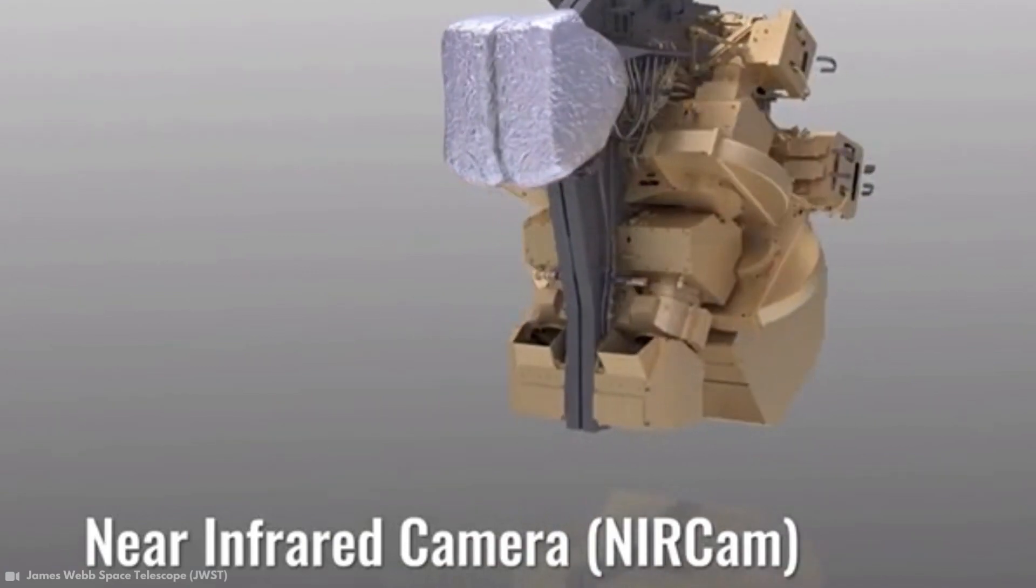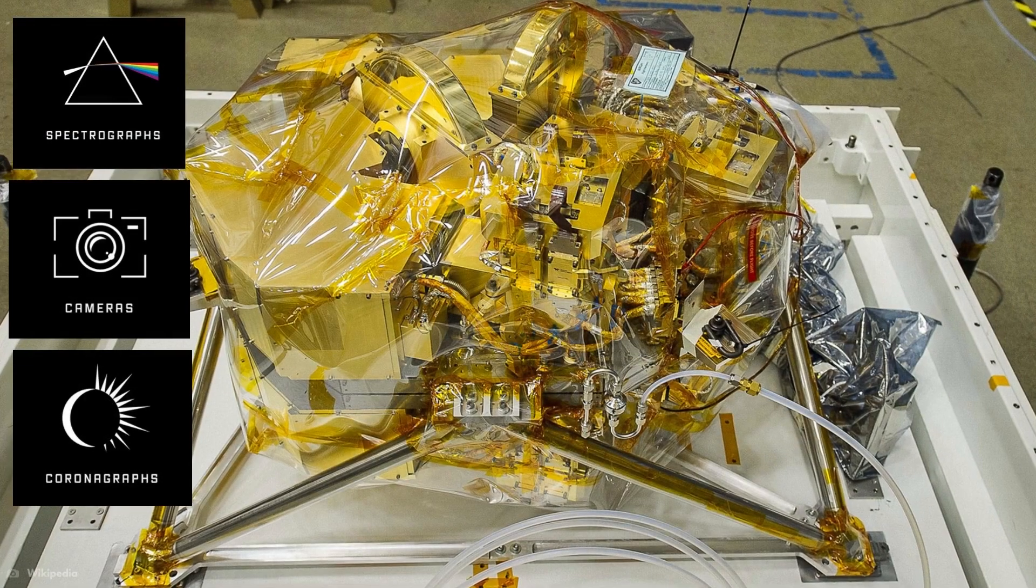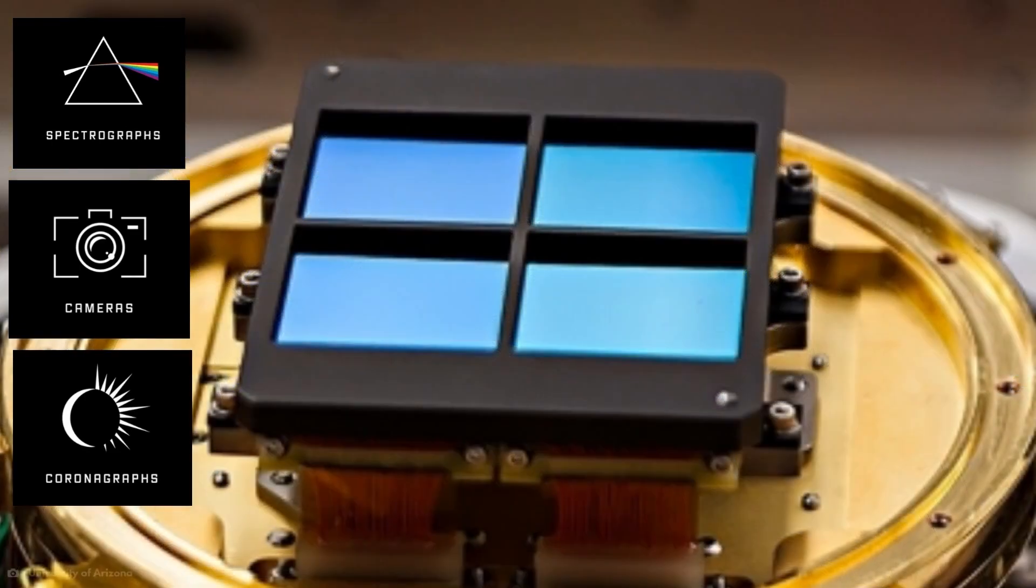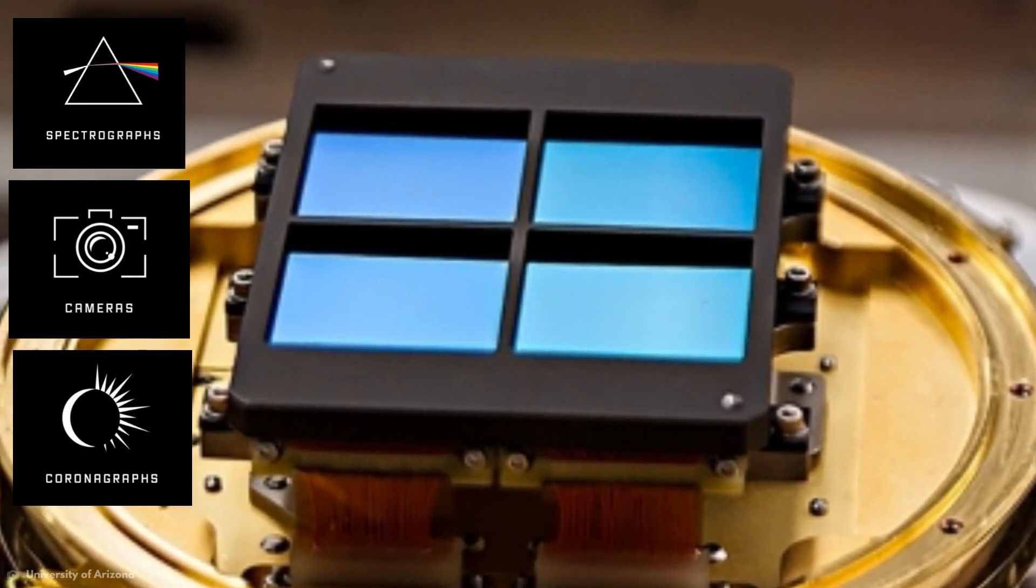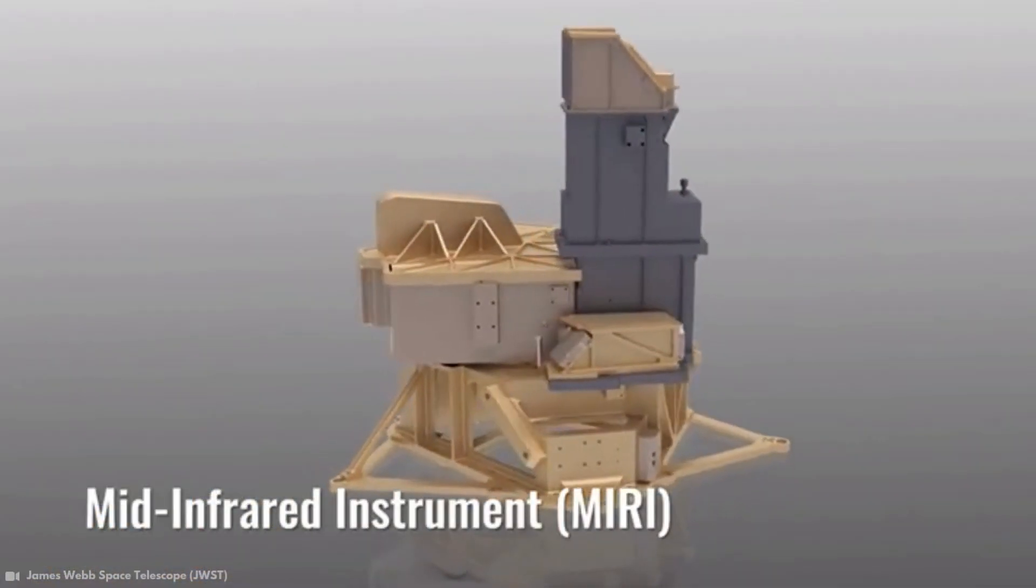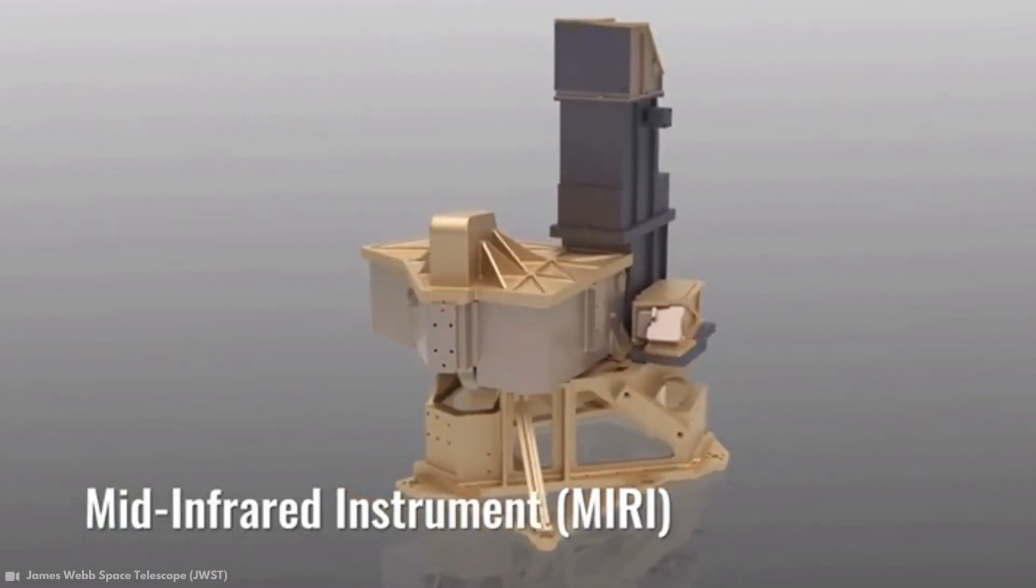The third instrument is the near-infrared camera. This instrument is the only near-infrared device with a coronagraph. It captures high-resolution images and spectra in the near-infrared.